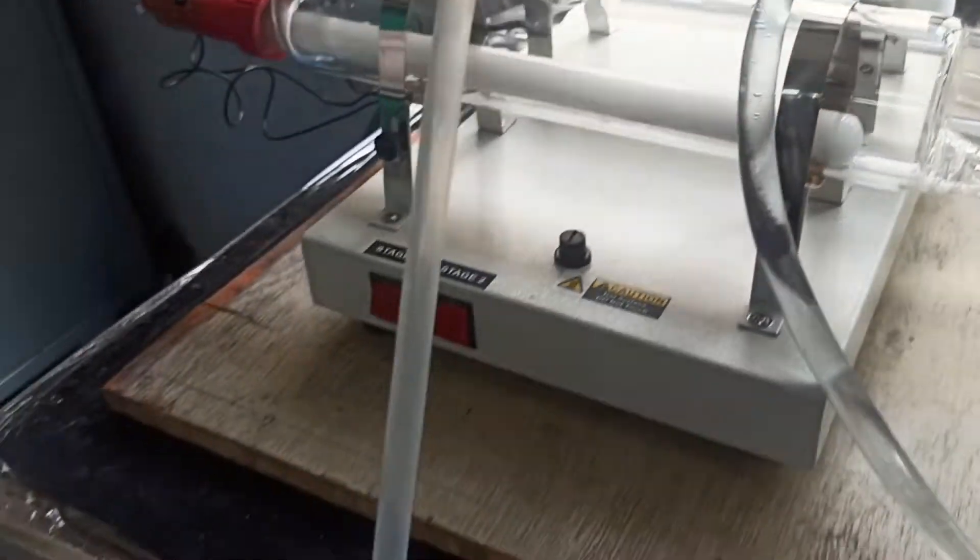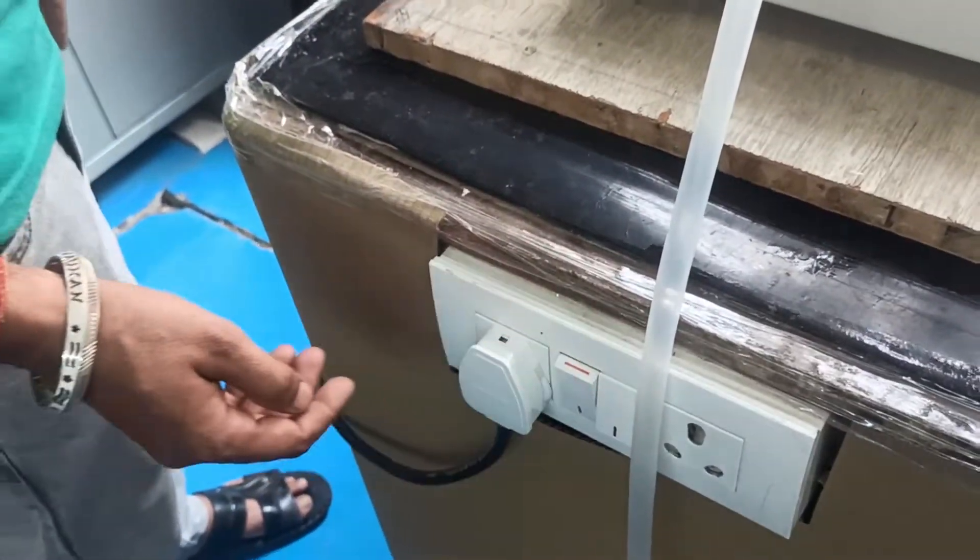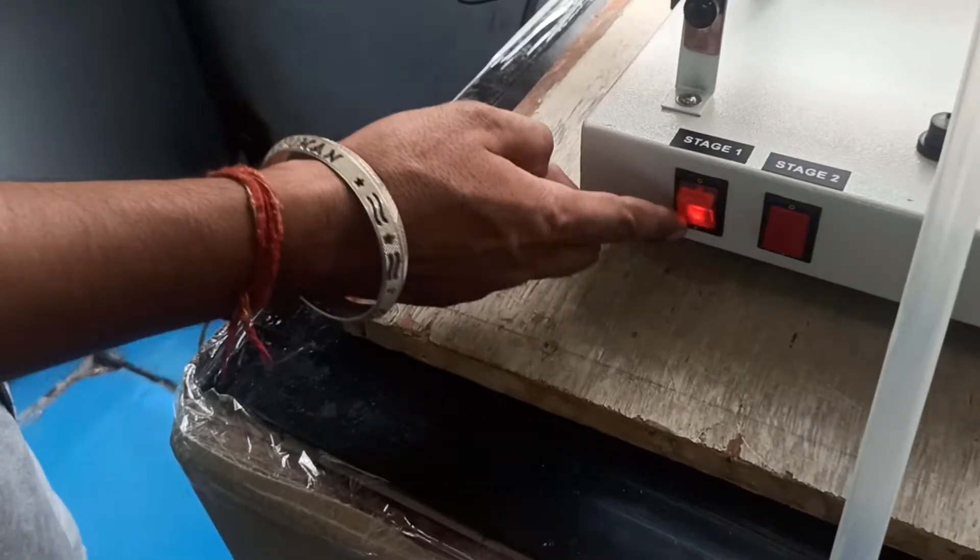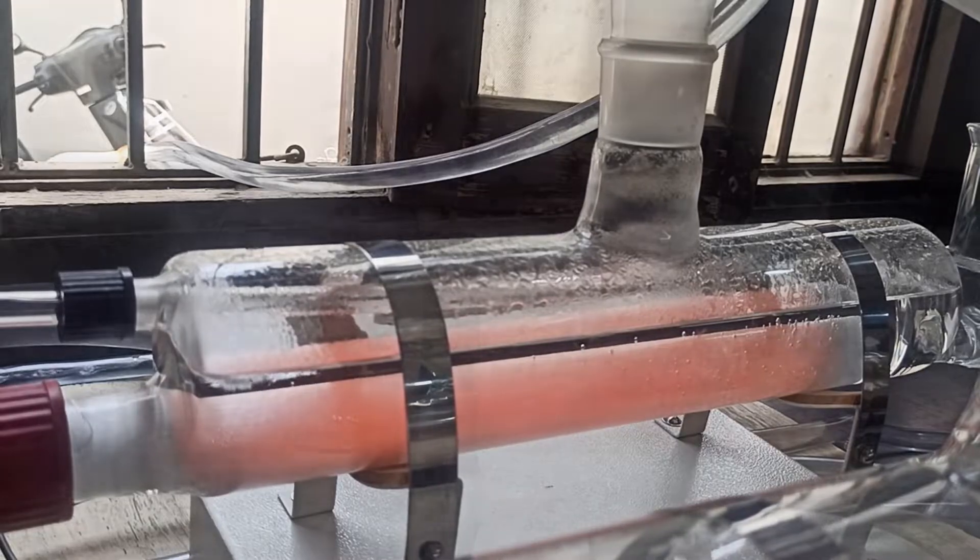Now, you can switch on the first stage power supply by pressing the stage 1 on-off switch. After some time, the distilled water output starts coming from the first stage.